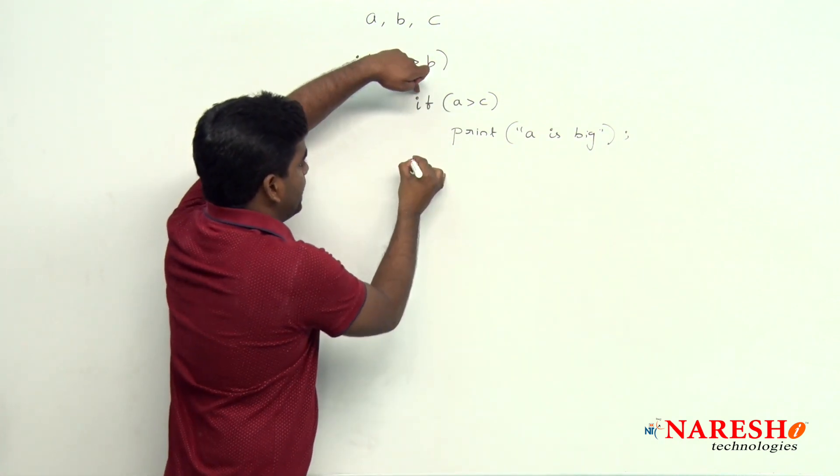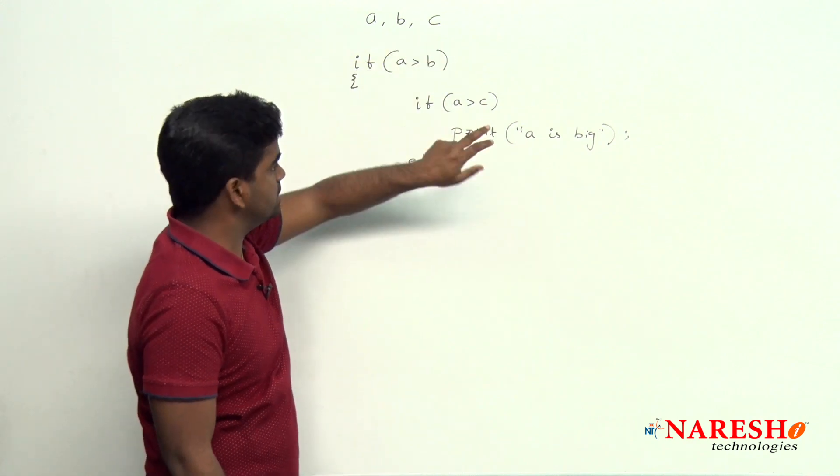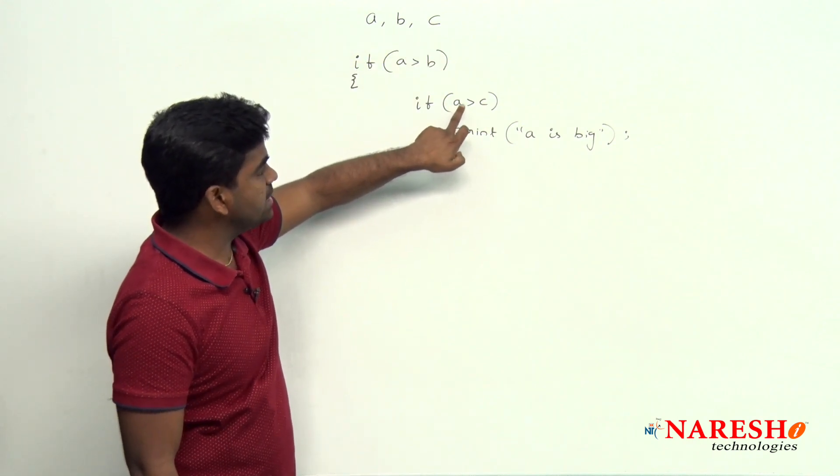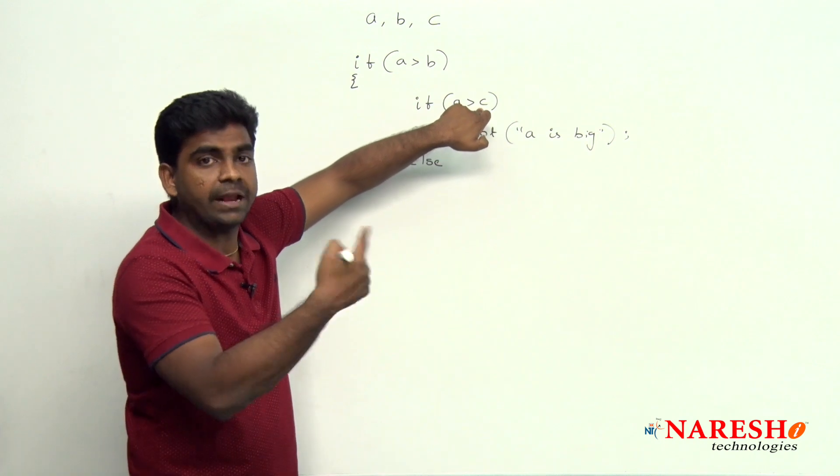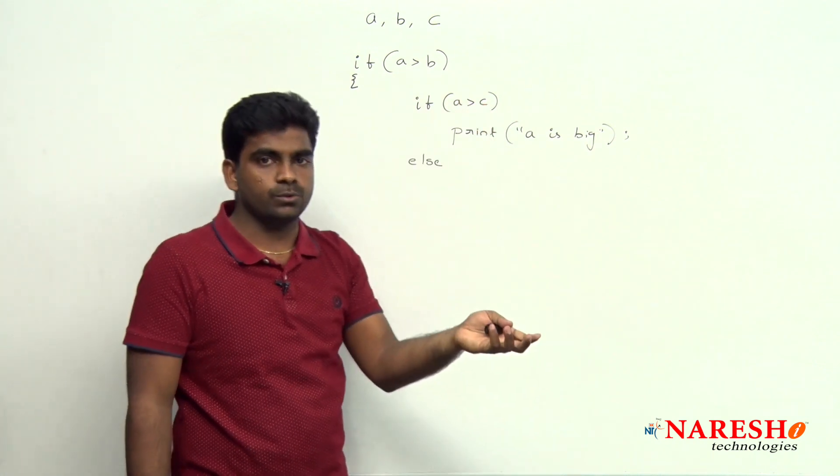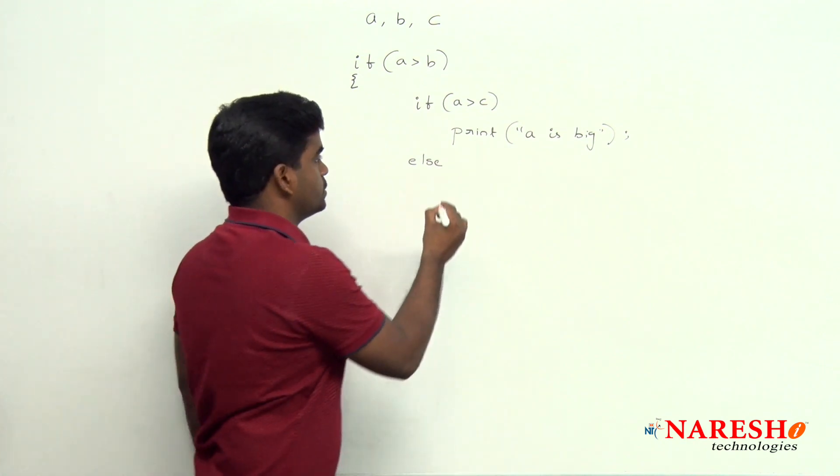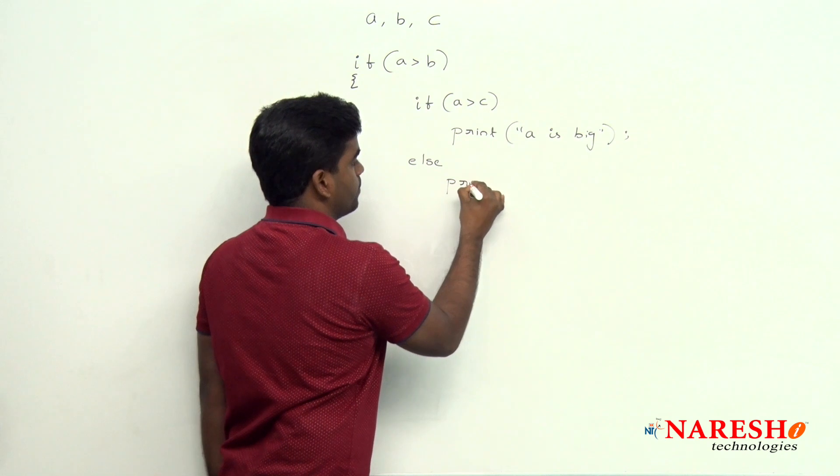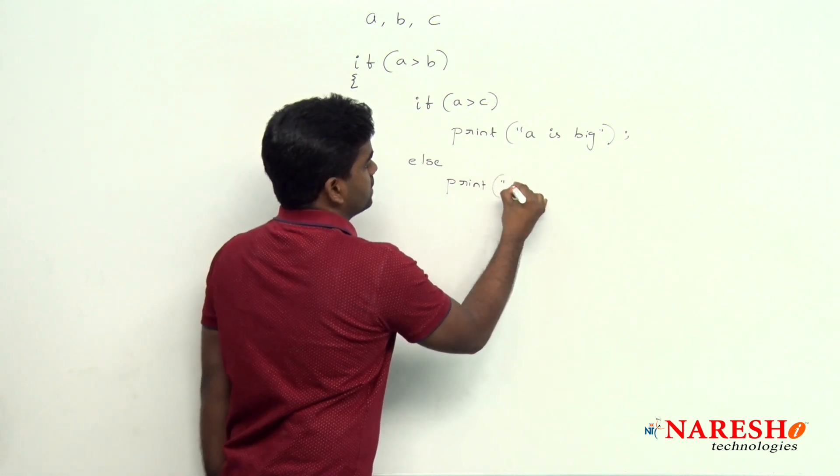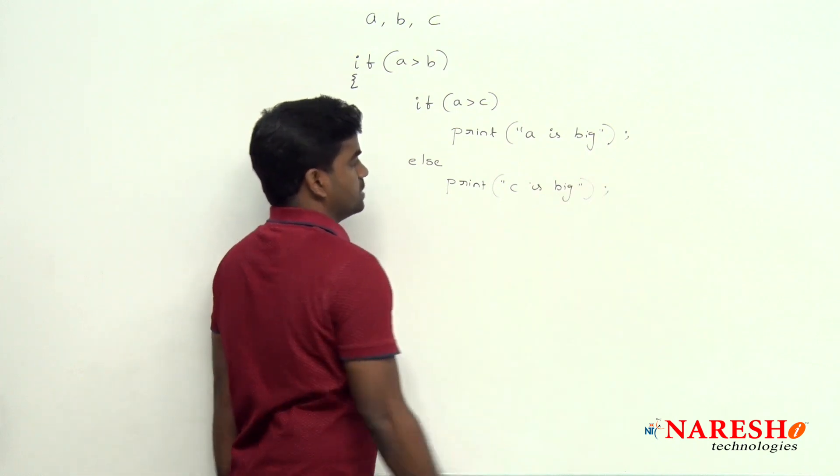And what is the else case? See here, whenever a is greater than c has failed, means c is greater than a is true, then automatically which one is big? c is big. So here print c is big.